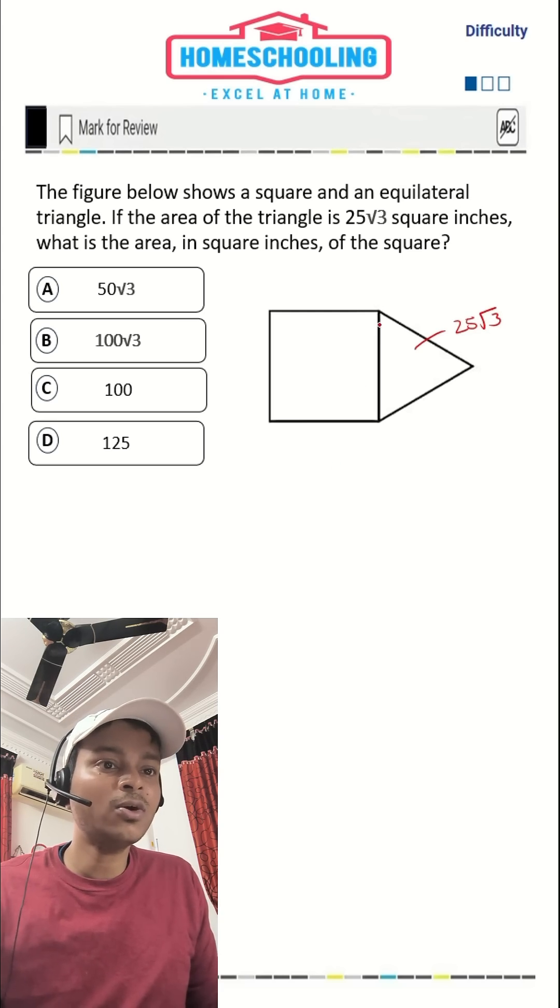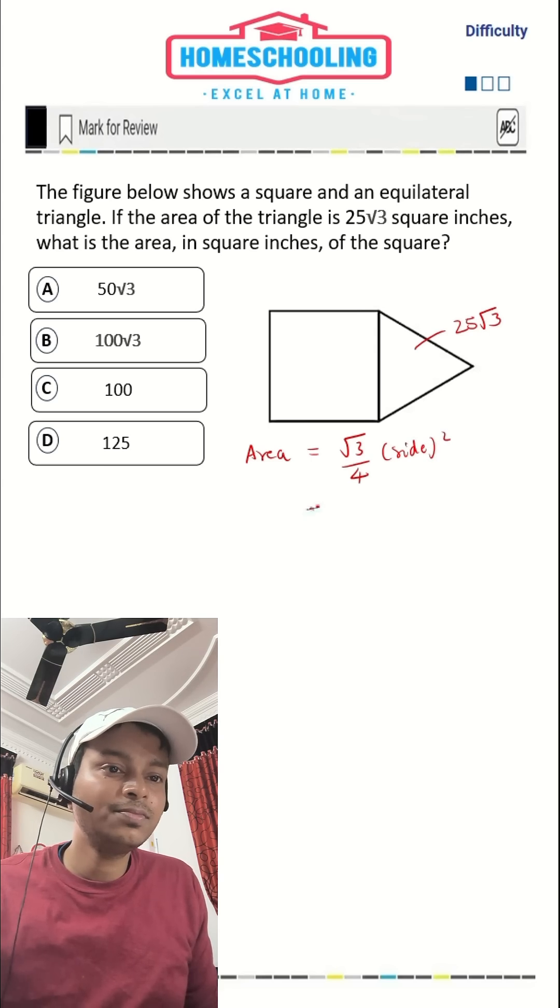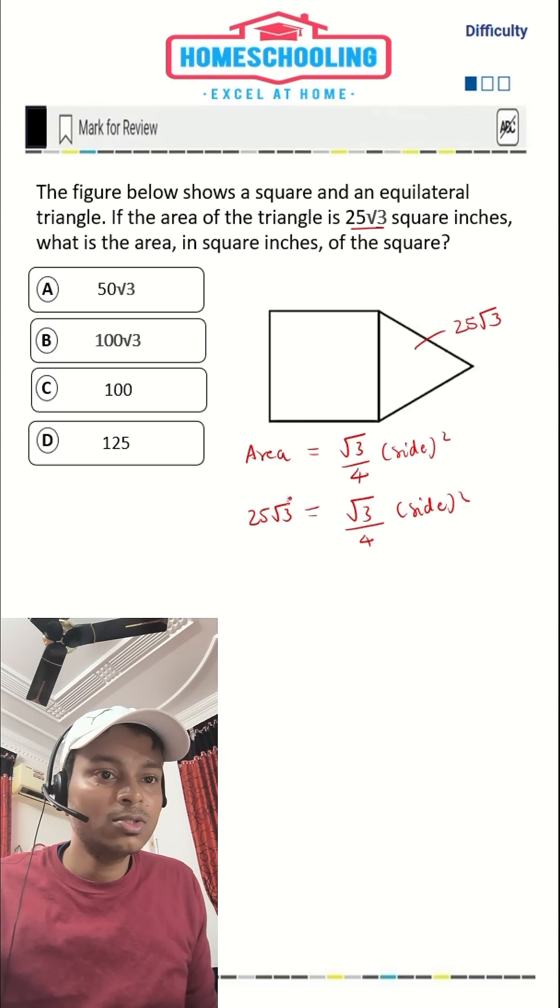In an equilateral triangle, all the sides are equal. The formula for area of an equilateral triangle is (√3/4) × side². In the question, area is given as 25√3, so 25√3 = (√3/4) × side². We can cancel √3 on both sides.